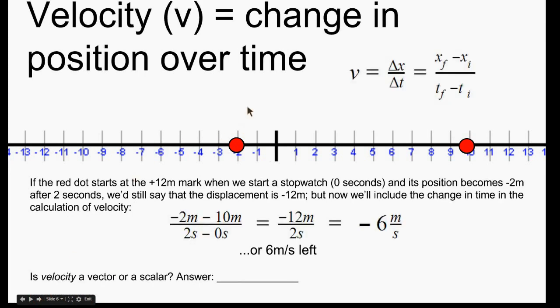Velocity is calculated by taking the change in the position over a certain amount of time. And here's the equation. So notice the displacement on top and the change in time on the bottom. So final position minus initial position divided by final time minus initial time. So using the similar example, we started here. Our initial position was at 10 meters. Our final position was at negative 2 meters.